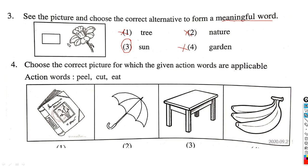Question number 4: Choose the correct picture for which the given action words are applicable. Action words are peel, cut, and eat. What do you understand by peel? Peel means skin. Cut means cut, and eat means eat. Peel means skin, cut means cut. What can we eat? We can peel it, cut it, and eat it at the same time.